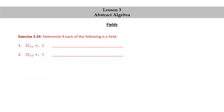Let's finish with an exercise. Determine if each of the following is a field. C₁₁ together with clock addition and clock multiplication — yes, this is a field, because 11 is prime. What about C₁₅ together with clock addition and clock multiplication? No, because 15 is not prime — 15 can be factored as 3 × 5.